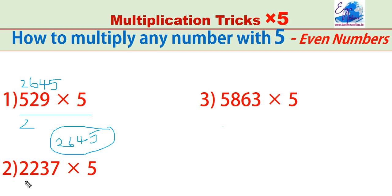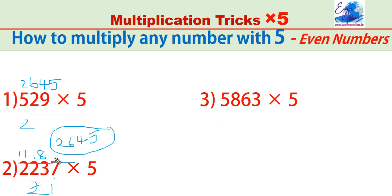See one more. 2237 into 5. First make it half: 1118, and don't take the remainder 1. Put 5 at the end. 11,185 is the answer.